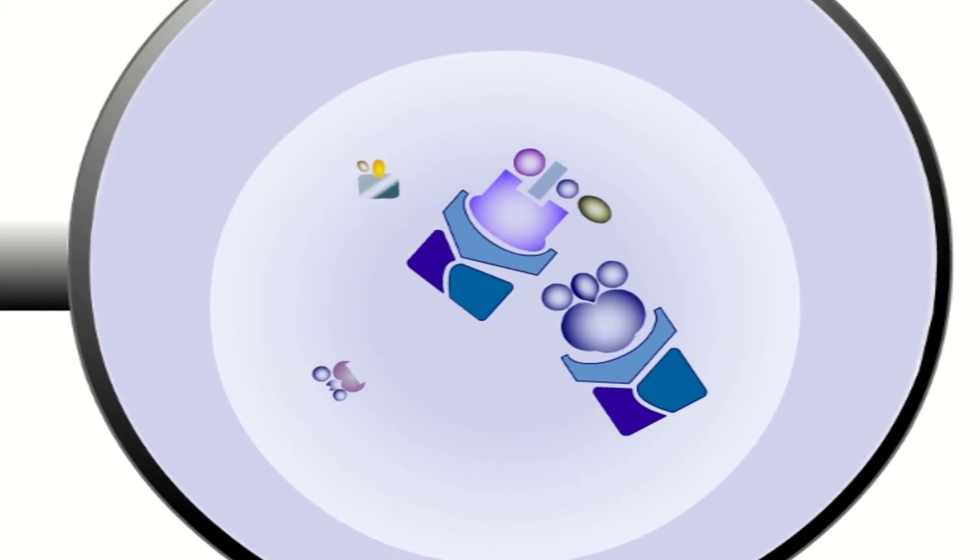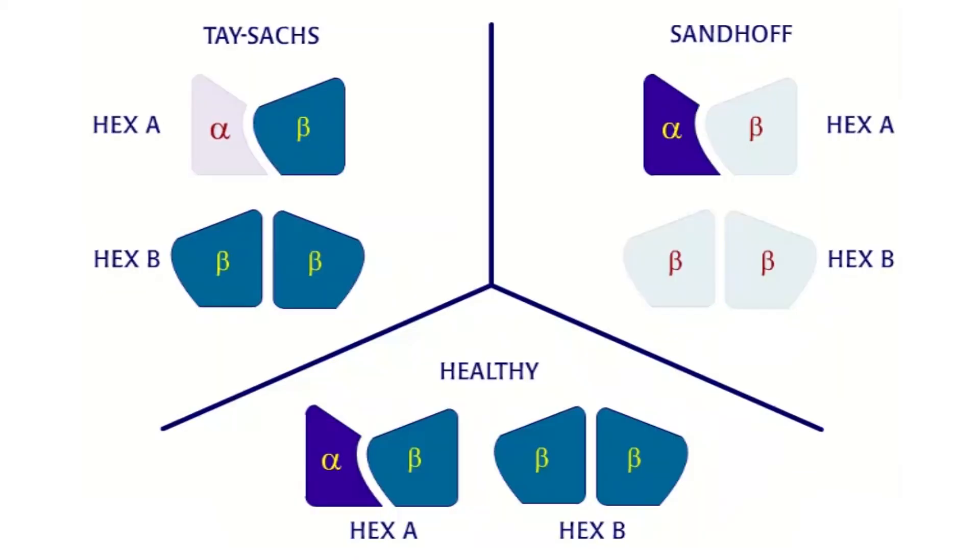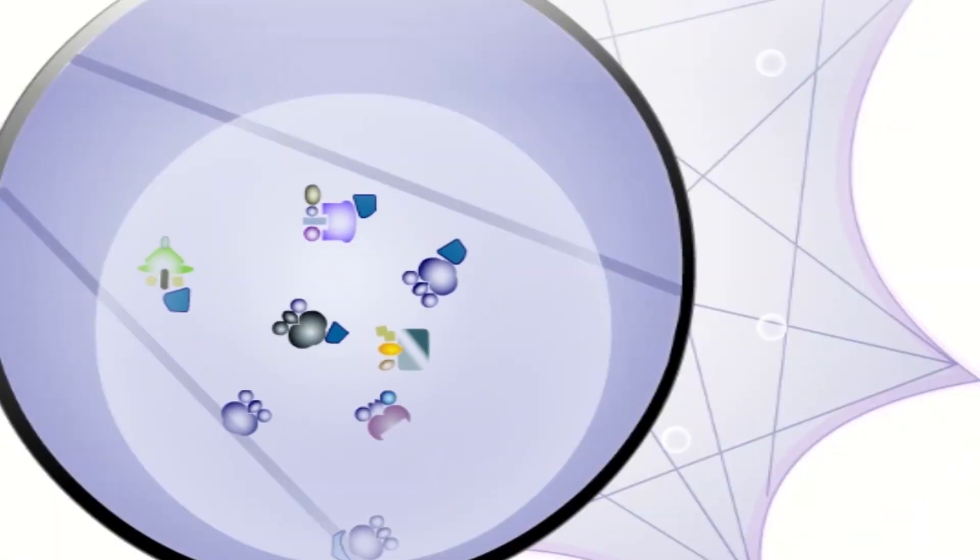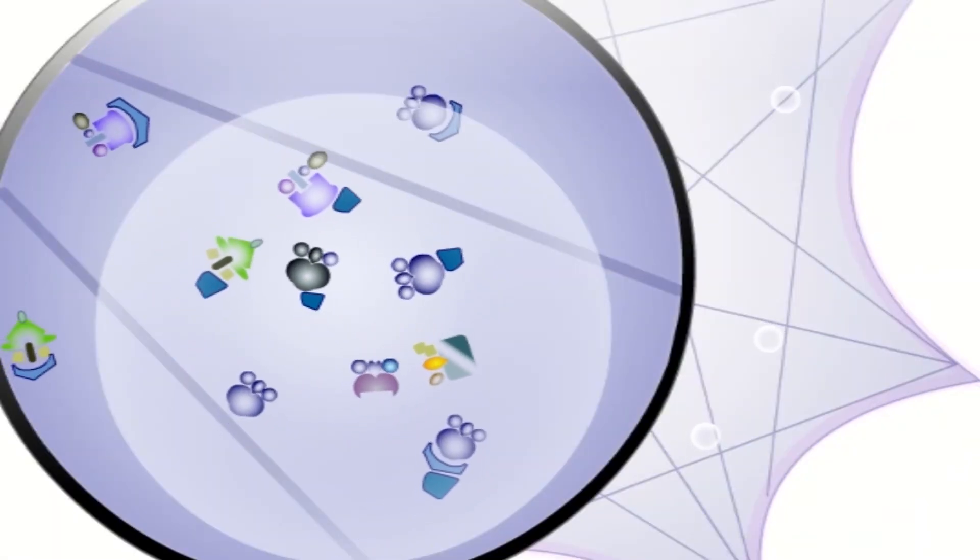In people with Tay-Sachs disease, the alpha subunit of hex A is either missing or not working properly. In a similar disorder called Sandhoff disease, the beta subunit of hex A and hex B is problematic. In both cases, the hex A cannot bind and hold GM2 ganglioside brought by the activator.